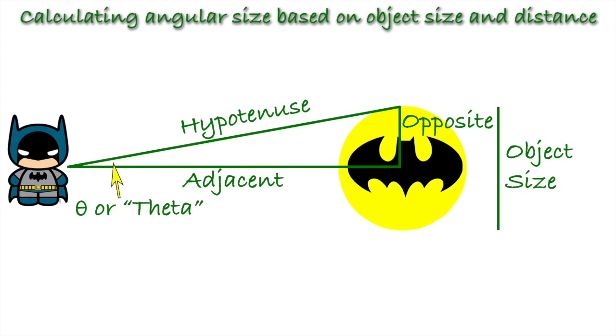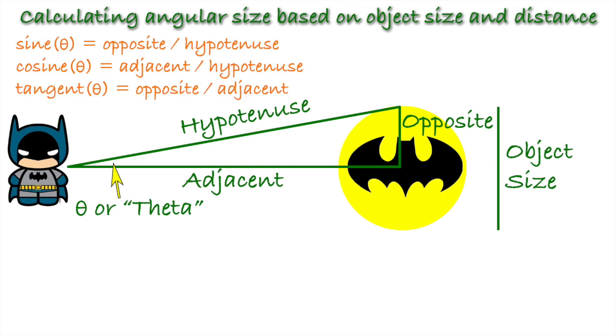The sides of a right triangle have specific names. The longest side is called the hypotenuse. The side near theta is called adjacent, and the side opposite theta is conveniently called opposite. The ratios between the lengths of the sides are trigonometric functions. These are actually just the ratios of the different sides of a right triangle. Sine is the length of the opposite divided by the hypotenuse. Cosine is adjacent divided by the hypotenuse. And tangent is opposite divided by adjacent.